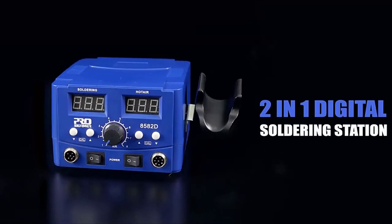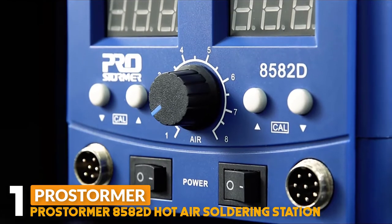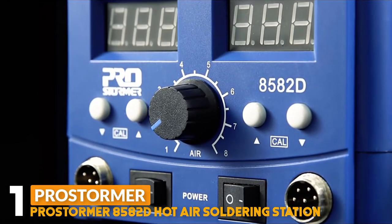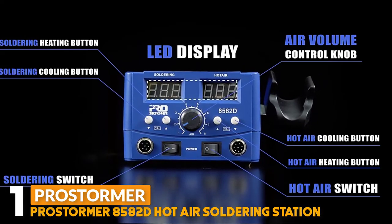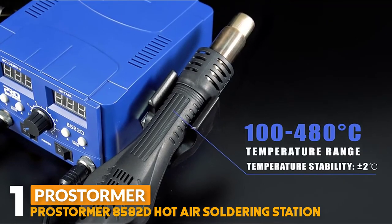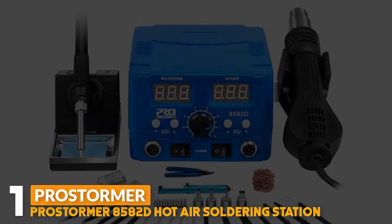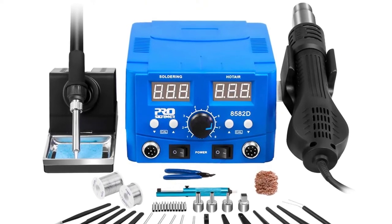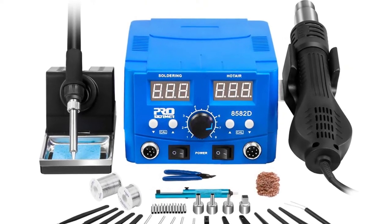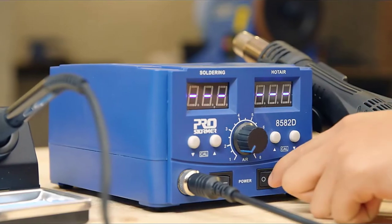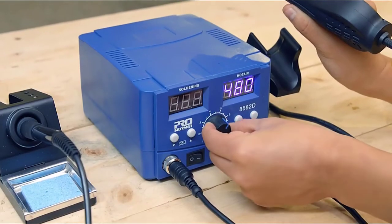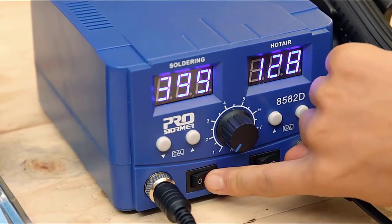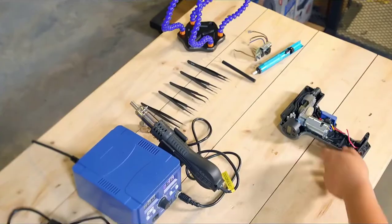Number 1. ProStormer 8582D hot air soldering station. This 8582D provides a 2 in 1 professional soldering and rework station. Hot air temperature ranges from 100 to 480 degrees Fahrenheit. Soldering station temperature ranges from 200 to 480 degrees Fahrenheit. Both the soldering and hot air station have temperature stabilization function to keep your iron at the set temperature steadily for your work.